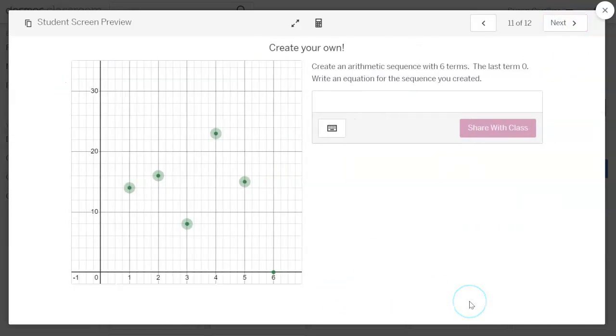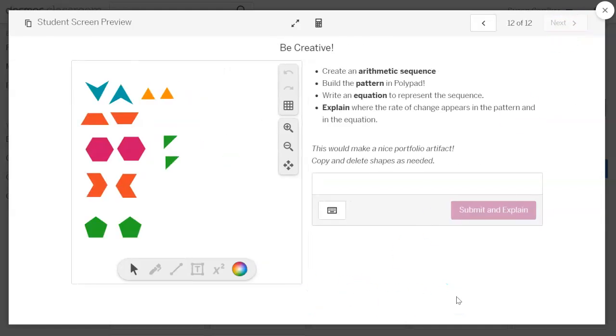And then here they get to pretty much just have fun. They are creating an arithmetic sequence with six terms. There is one limitation though. The last term must be zero. So I'm not going to tell you what that means, but there's something specific they should all have in common because that last term is zero. So they will create their equations here.